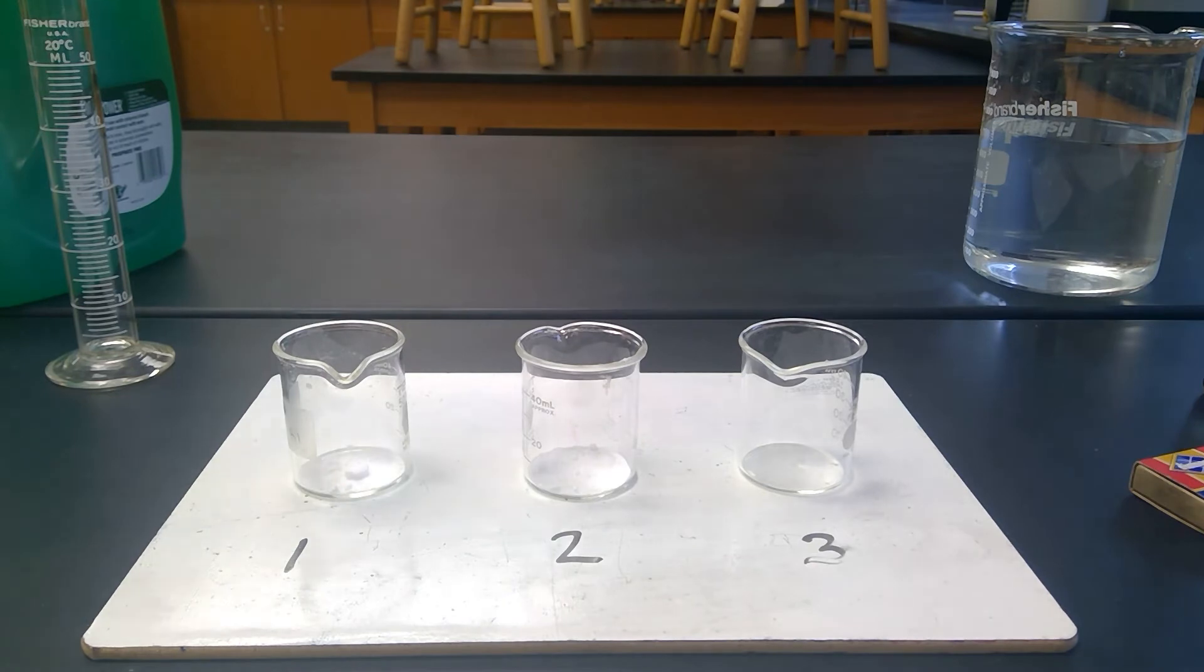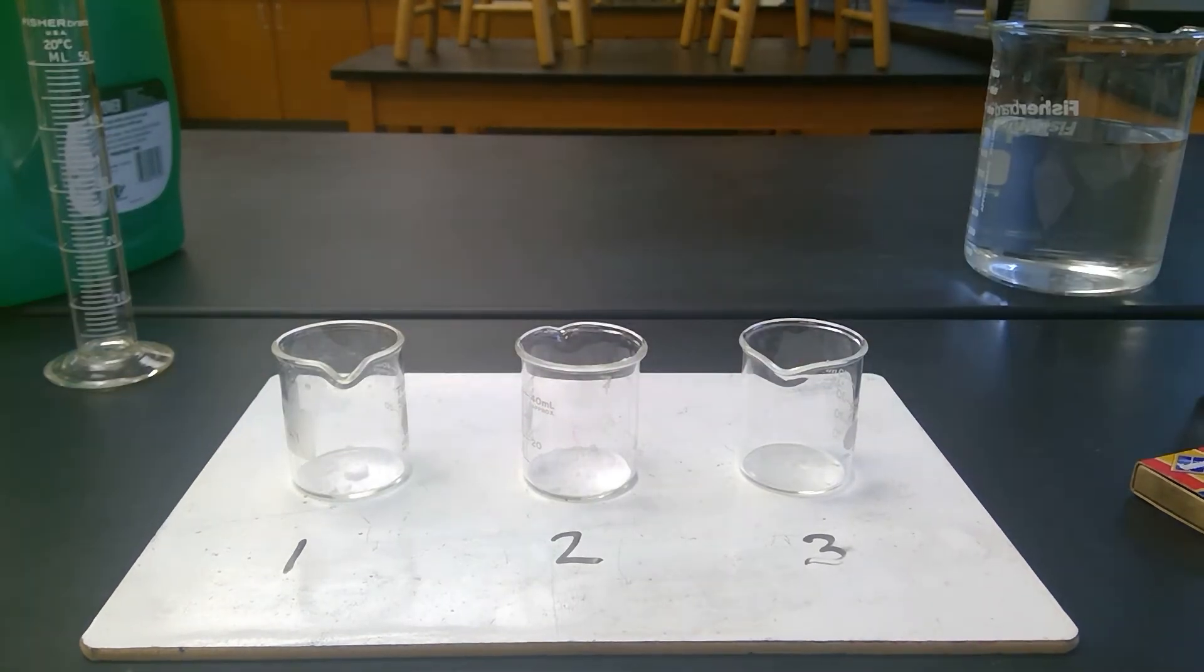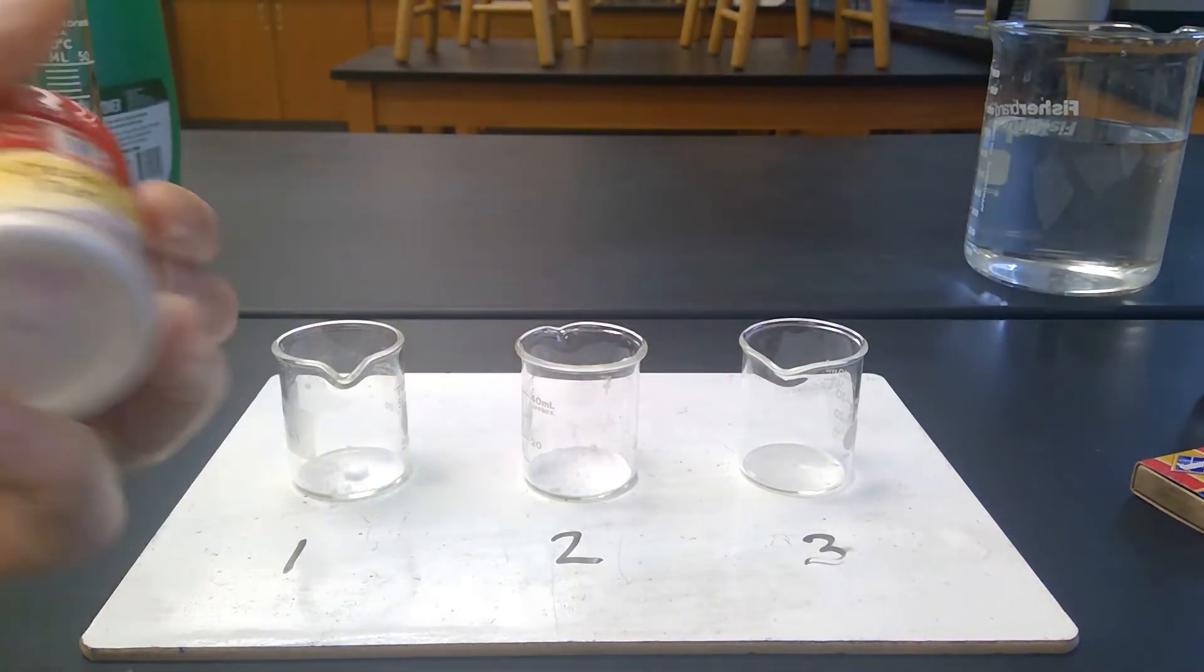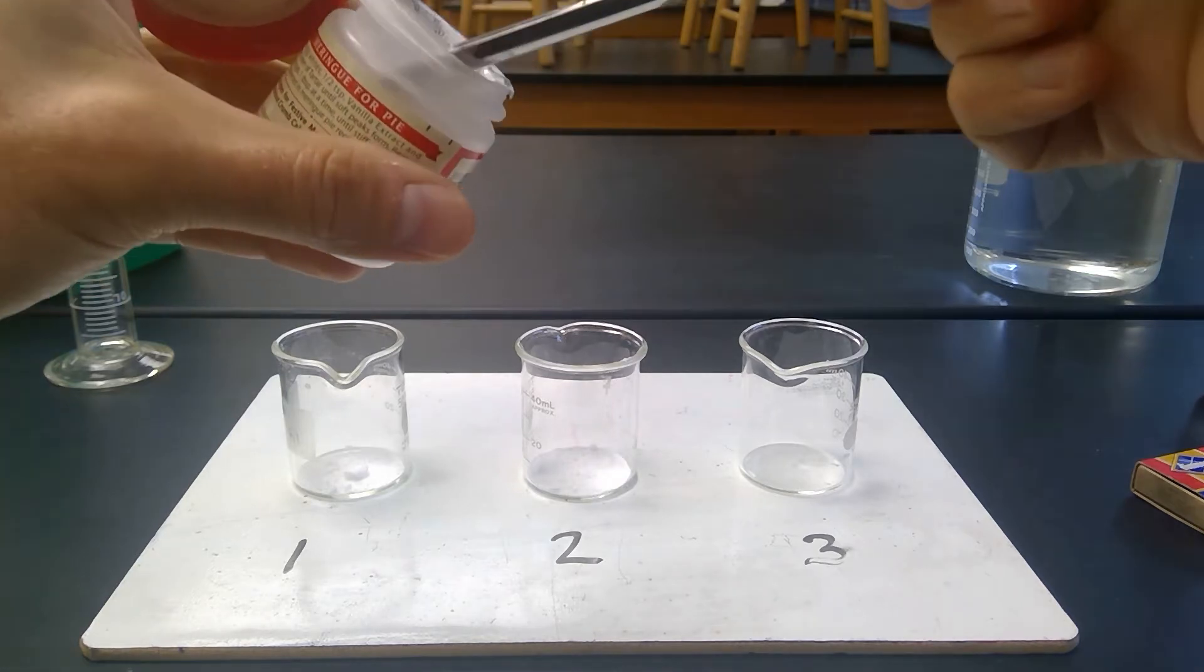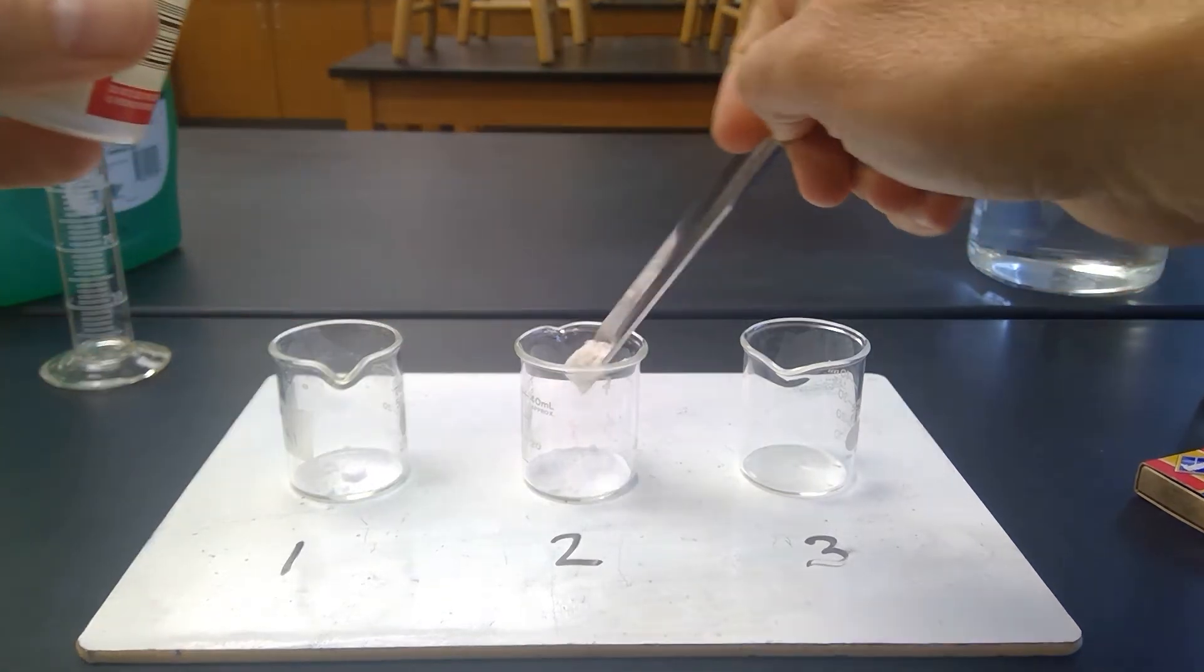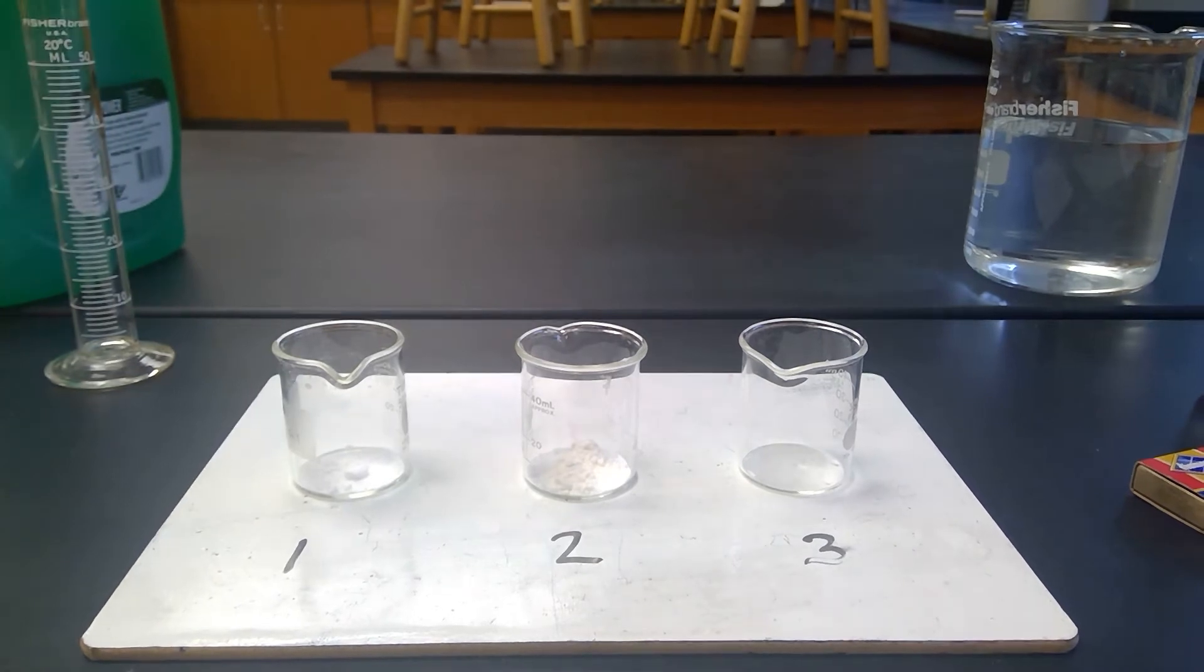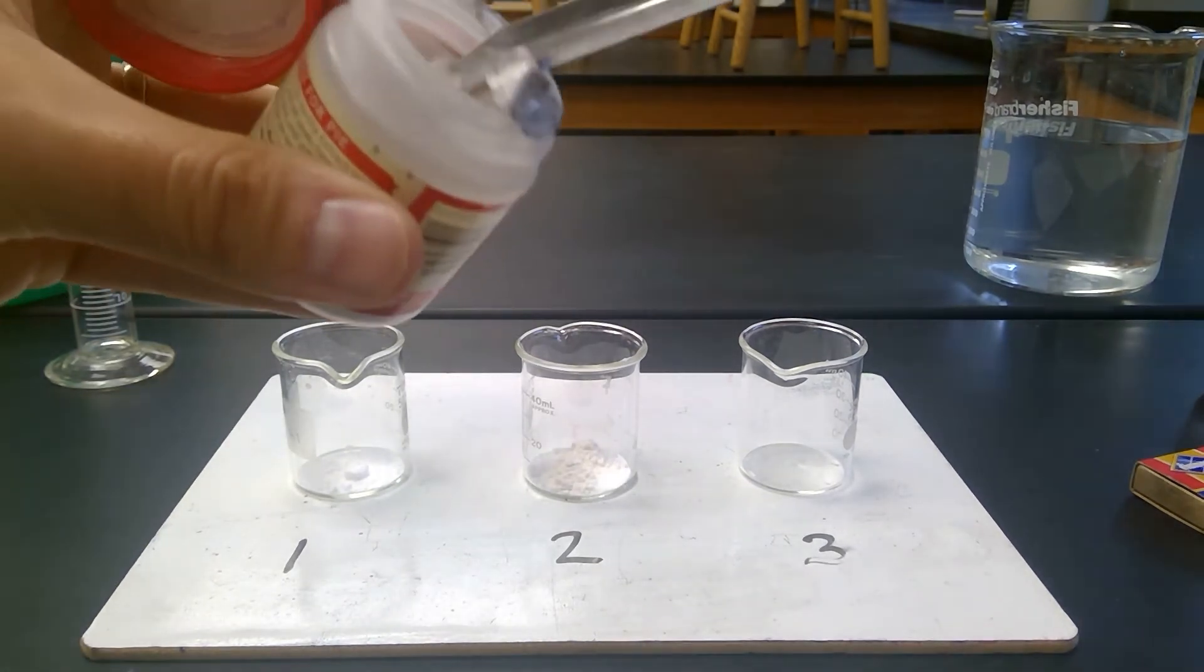And then I have a separate scoopula for cream of tartar. This is cream of tartar. It's something that you add in dishes as a thickening agent. There's cream of tartar. And then in number three, I'm going to add two small scoops of cream of tartar.